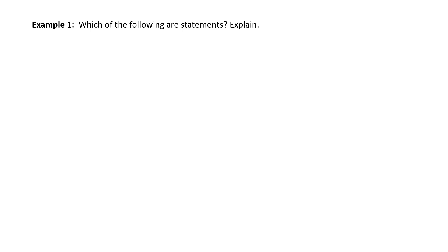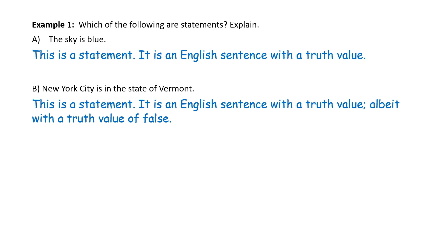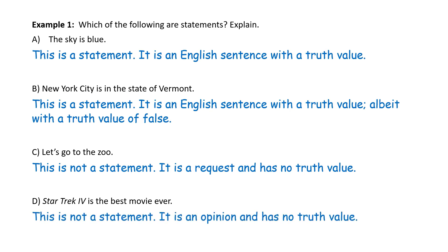Which of the following are statements? Part A: 'The sky is blue.' This is a statement — it is an English sentence with a truth value. B: 'New York City is in the state of Vermont.' This is also a statement; it is an English sentence with a truth value, albeit false. C: 'Let's go to the zoo.' This is not a statement — it is a request and has no truth value. D: 'Star Trek 4 is the best movie ever.' This is not a statement — it is an opinion and has no truth value.